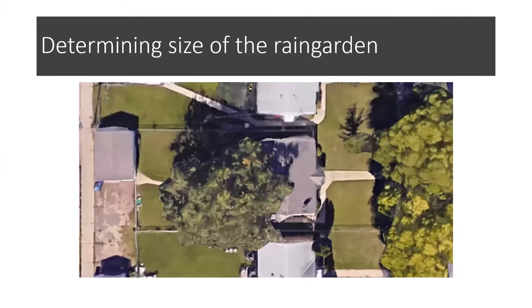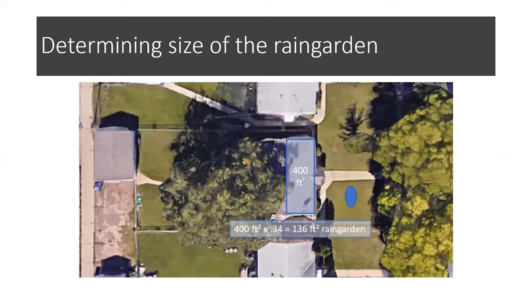The next number in the equation is our drainage area — the area being directed into the rain garden. My rain garden is in the front yard, and the drainage area is just half of the roof, which is 400 square feet. You can measure area in Google Maps or on the Sherbourne County Beacon website. So we multiply 400 square feet by the soil factor number 0.34, which gives us 136 square feet — that is the size of my rain garden.